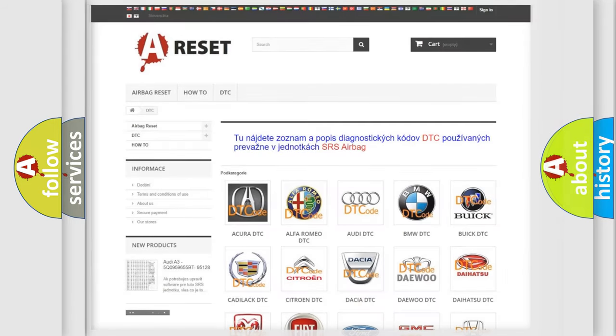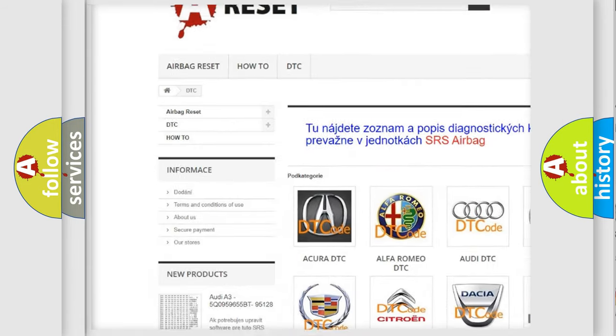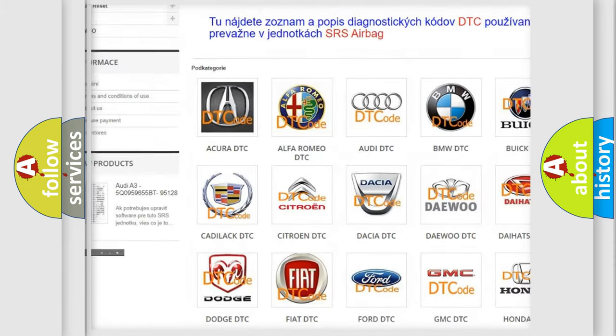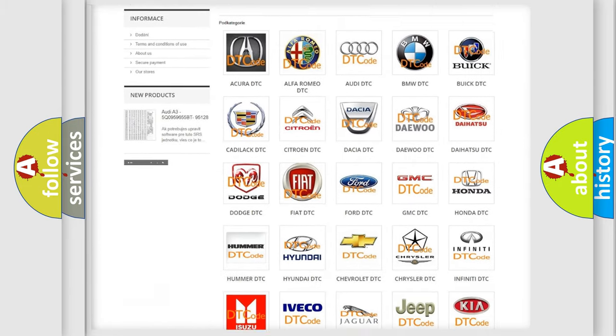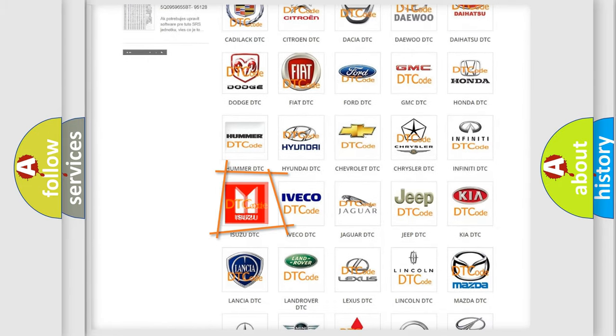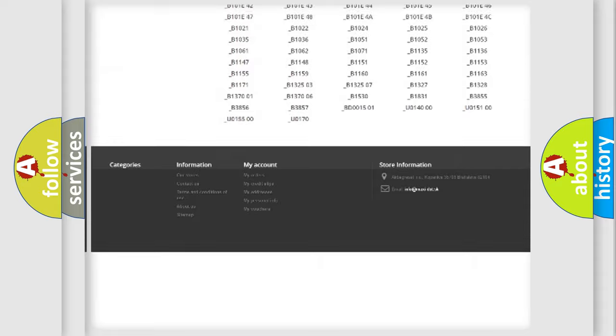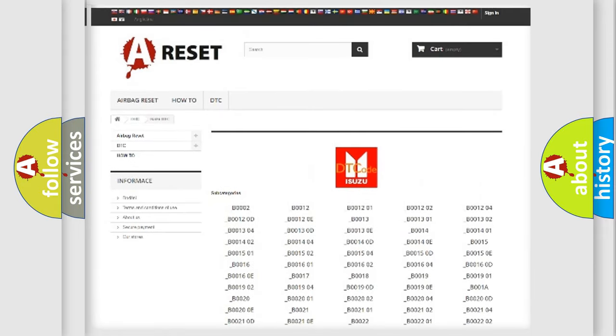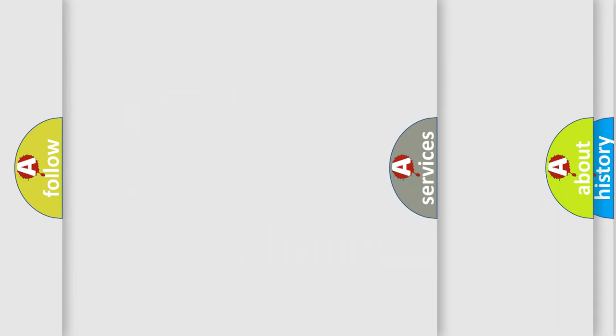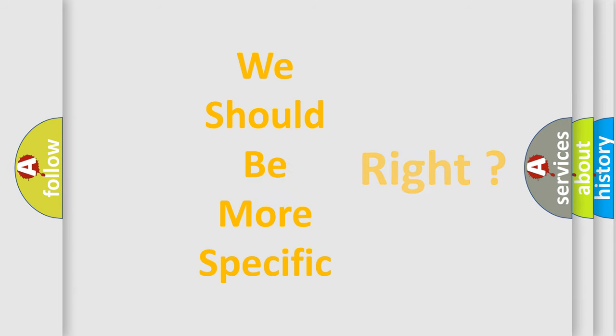Our website airbagreset.sk produces useful videos for you. You do not have to go through the OBD2 protocol anymore to know how to troubleshoot any car breakdown. You will find all the diagnostic codes that can be diagnosed in Isuzu vehicles, and also many other useful things. The following demonstration will help you look into the world of software for car control units.